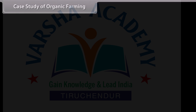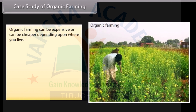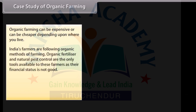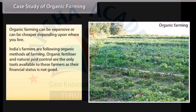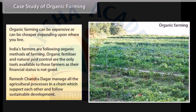Case study of organic farming: Organic farming can be expensive or cheaper depending upon where you live. India's farmers are following organic methods of farming. Organic fertilizer and natural pest control are the only tools available to these farmers, as their financial status is not good. Ramesh Chandra Dagar manages all agricultural processes in a chain that supports each other and follows sustainable development.